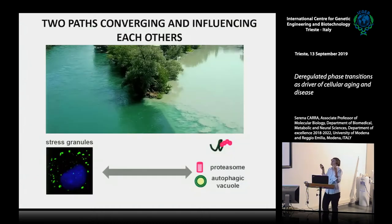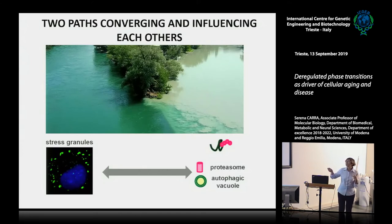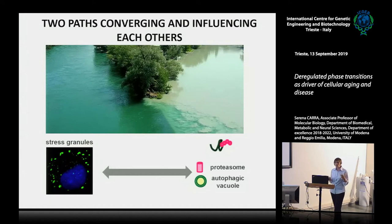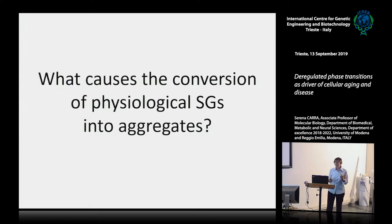We asked whether these two genetic pathways can converge and influence each other. We think of a dense phase of misfolded proteins that may poison the liquid-like phase of stress granules due to impairment of protein quality control. This was really the central question: what is the cause of the conversion of physiological stress granules into an aggregated state?